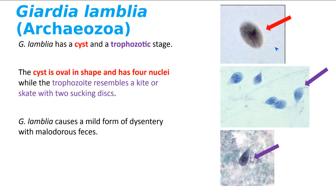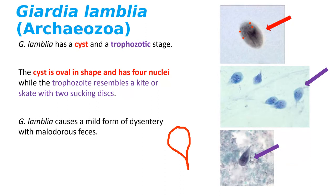The cyst is oval in shape and has four nuclei — you can count them: one, two, three, four. When this gets into the stomach, the acid weakens it; it breaks apart in the small intestines and becomes trophozoitic. Each of those four nuclei becomes a trophozoite. To me, the trophozoite looks like a kite — some people say it looks like a flounder. It has two structures that look like eyes, but those are sucking discs. It also has multiple flagella, which are not stained so you can't really see them.